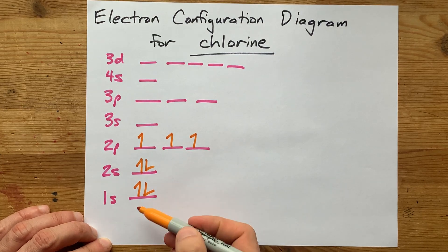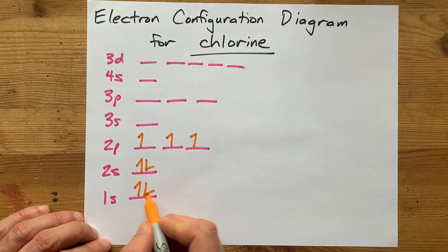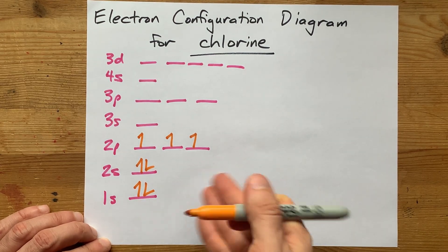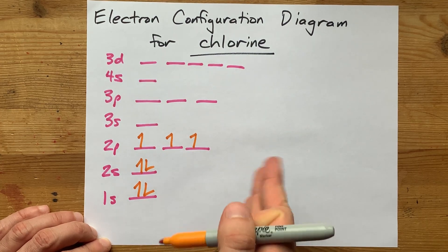By the way, I'm working from the bottom up. That's the Aufbau principle. Putting one up, one down in each. That's the Pauli exclusion principle. And spreading them out before I double them up. That's Hund's rule.